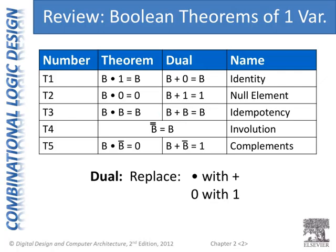Involution: if we invert a variable twice, we get that variable back. And complements: if we have a variable in an AND relationship with the inverse of that variable, we get zero. If we have a variable in an OR relationship with its inverse, we get one, because one of these terms is going to be one no matter what.